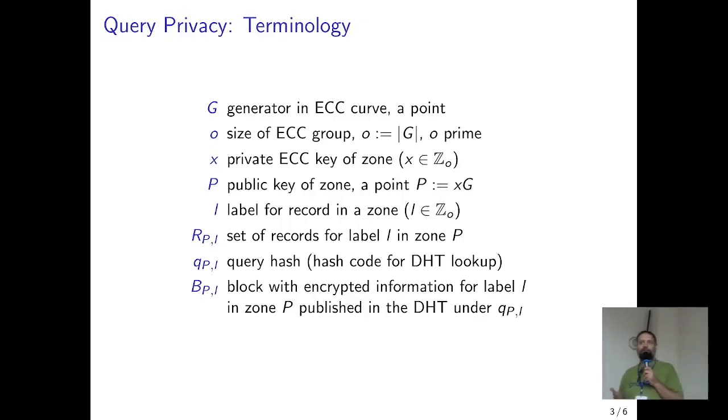In the domain name system, we publish a set of records, like the IP addresses we are trying to resolve or certificates for the websites with Dane records. We'll call this R_P,l, the records published in zone P under label l. When you ask for those records, we send out a query q_P,l for the label l in zone P. What we store in the network is B_P,l. The idea is we will store the information of the name system on untrusted servers that are not supposed to learn what we are asking and what the answers are. We want to achieve query privacy and response privacy while at the same time achieving integrity and authenticity of the answers.